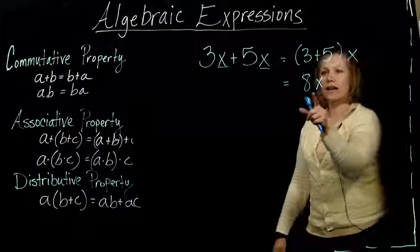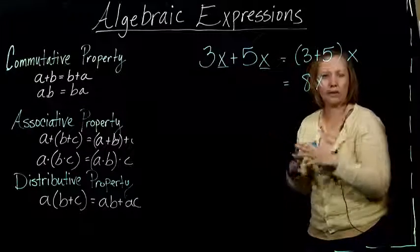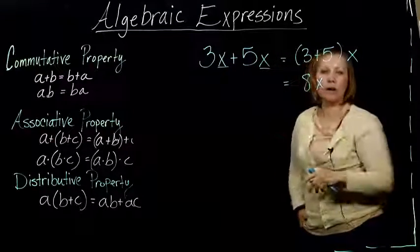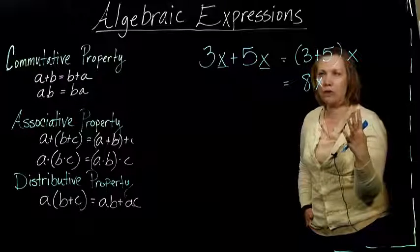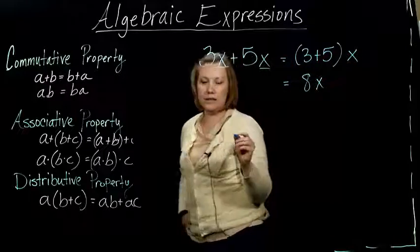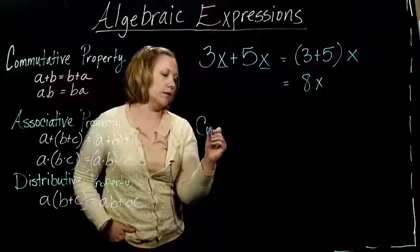The shortcut to think about this is: I've got 3 x's, I've got 5 more x's. How many x's do I have total? I have 8 x's. This has a fancy name - this is called combining like terms.